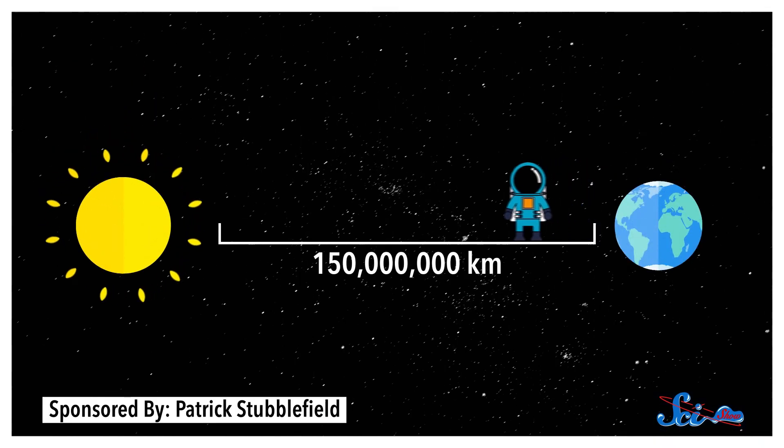You could get a lot closer if you invented and wore a spacesuit that blocked out all kinds of radiation, except for infrared light, which is what we feel as heat. Most spacesuits are designed to withstand temperatures up to about 400 Kelvin, and you'd probably be fine until you got around 95% of the way to the sun.